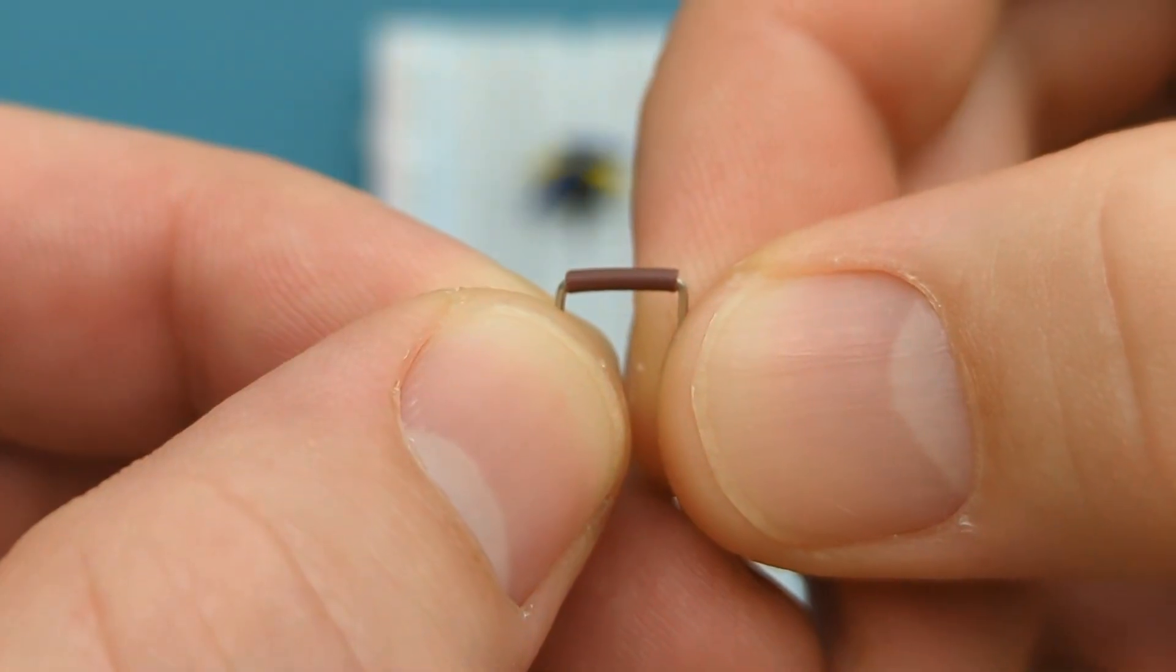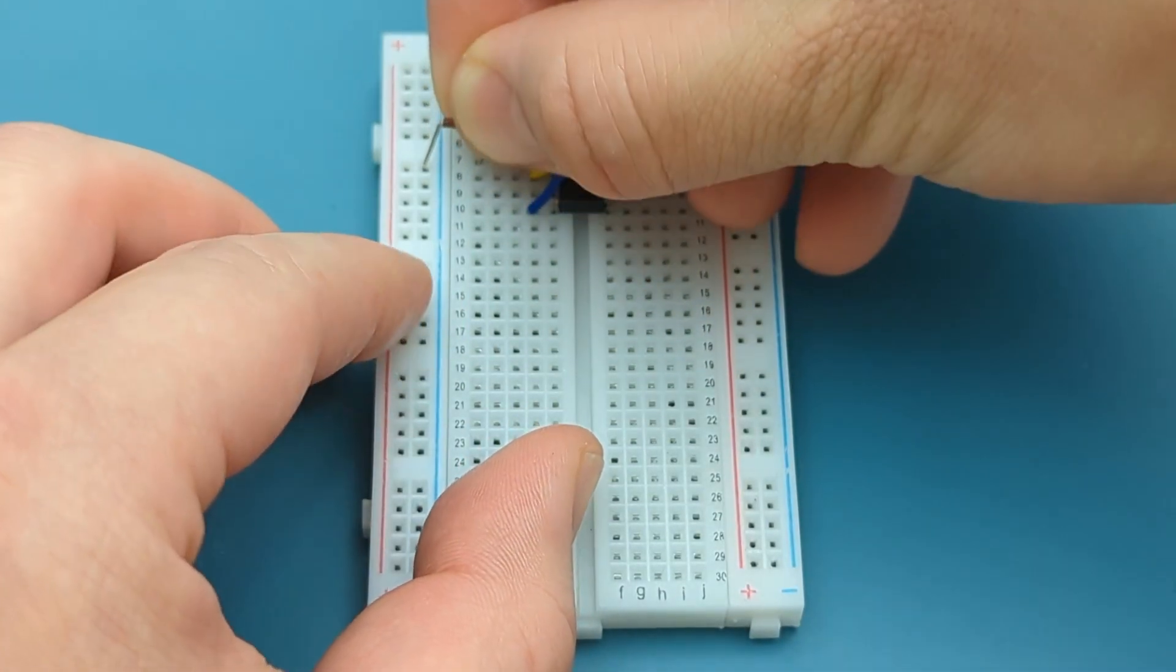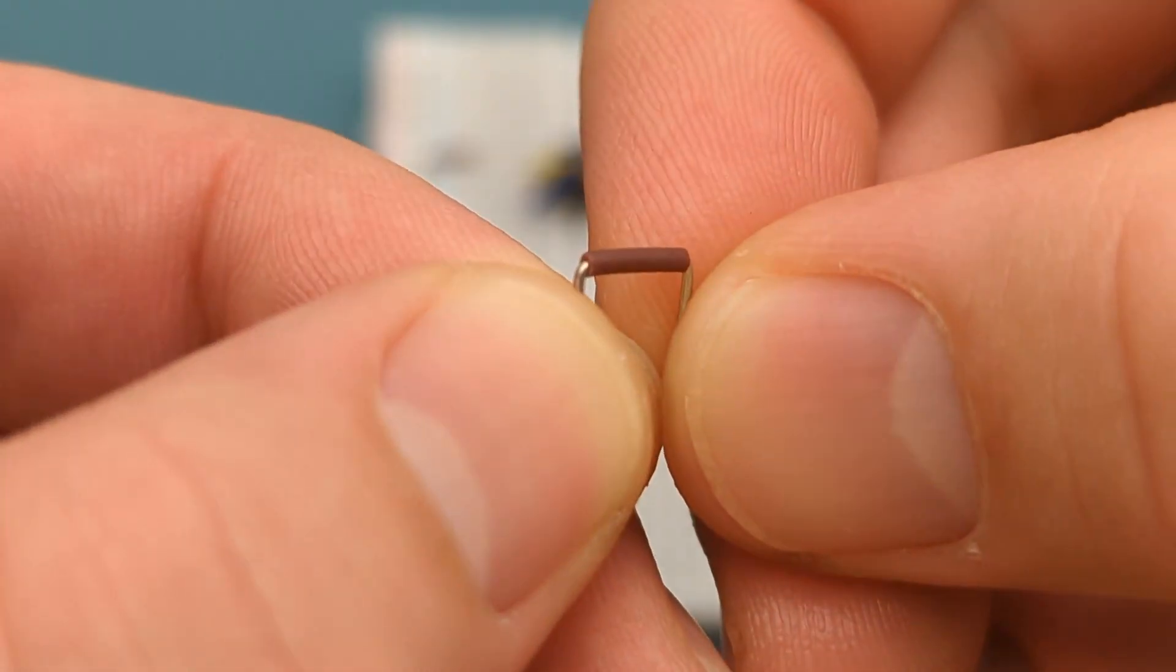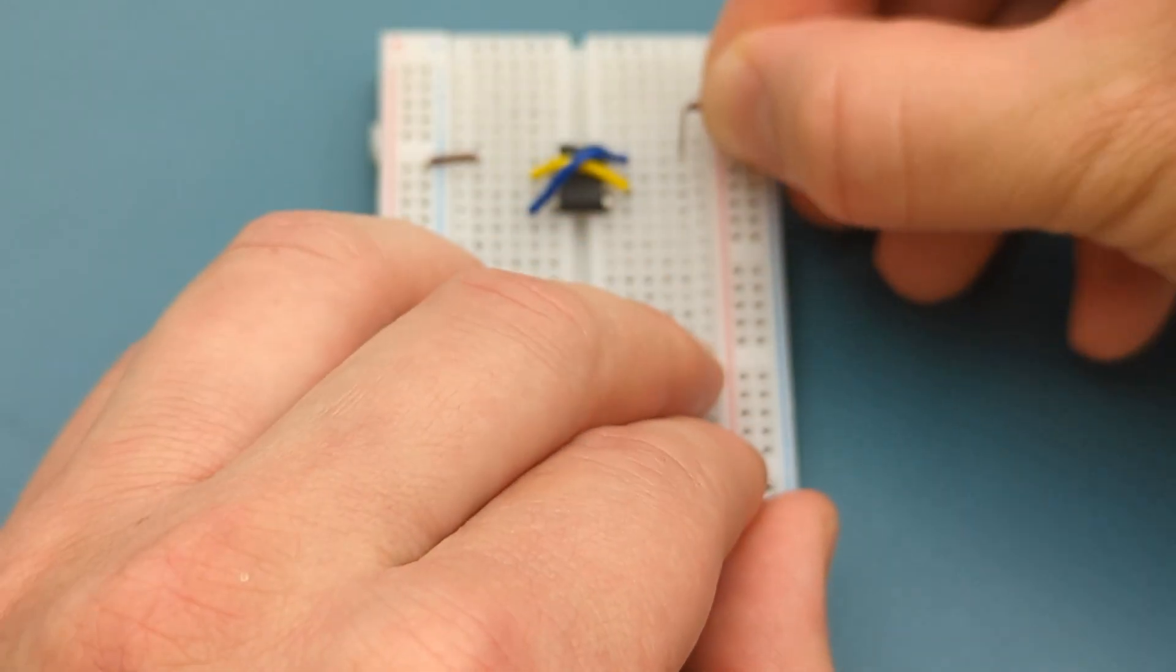A jumper wire connects pin 1 or ground to the negative rail. A jumper wire connects pin 8 or VCC to the positive rail.